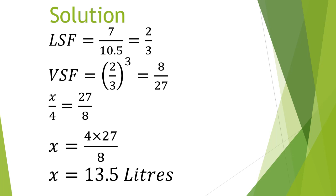Solution: linear scale factor is 7 over 10.5, that simplifies to 2 over 3. Volume scale factor is 2 over 3 cubed, and that gives us 8 over 27. X over 4 is 27 over 8. X is 4 multiplied by 27 over 8. So our solution is 13.5 liters.